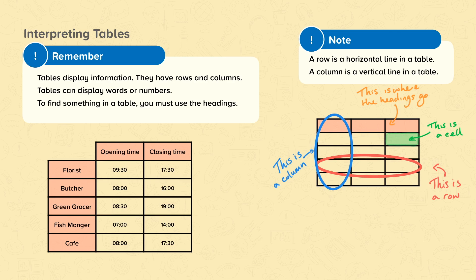We can read information from a table. If I wanted to know the opening time of the greengrocer, I would go to the greengrocer row and the opening time column and find the cell that is in both. You can use your fingers to help you find the cell. We can see from this that the greengrocer opens at 8.30.